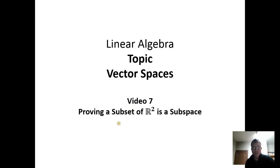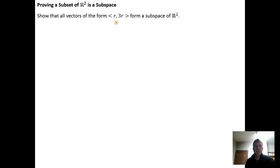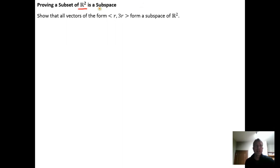In this video we're going to go over an example proof showing that a subset of R2 is a subspace. We're going to consider the subset of R2 — remember R2 is just the set of all two-component vectors — and we're going to pick a specific subset: all vectors that have the form (r, 3r), where r is just a real number.